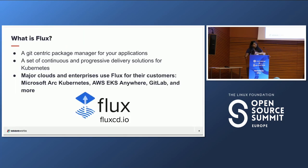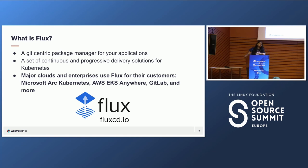Flux is a Git-centric package manager for your applications and a set of continuous and progressive delivery solutions for Kubernetes. Git isn't the only system you can use — it can also listen to S3, OCI registries, and a lot of other things. It was created with Kubernetes in mind, so it's a natural extension of whatever you're already doing. At its core, it continuously monitors your version control system and applies the desired state that you have there. It runs on a schedule — most commonly every 10 minutes.